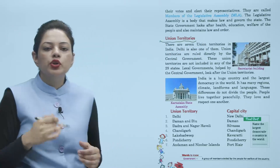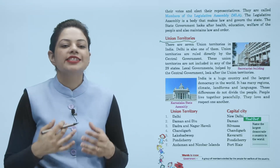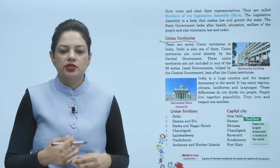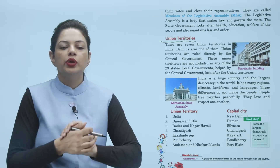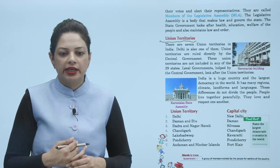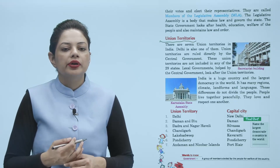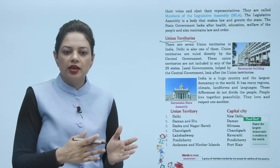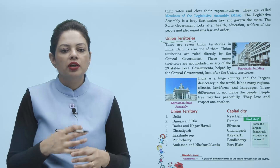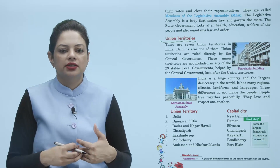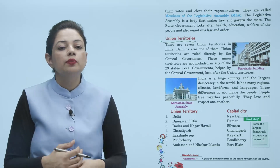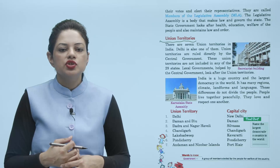Union territories are ruled directly by the central government. These union territories are not included in any of the 29 states. The central government looks after the union territories. India is a huge country and the largest democracy in the world.